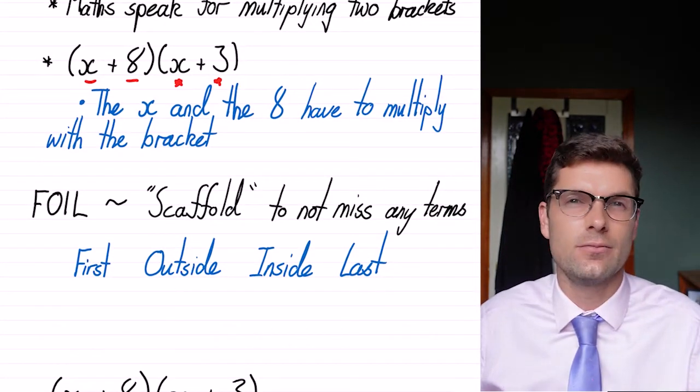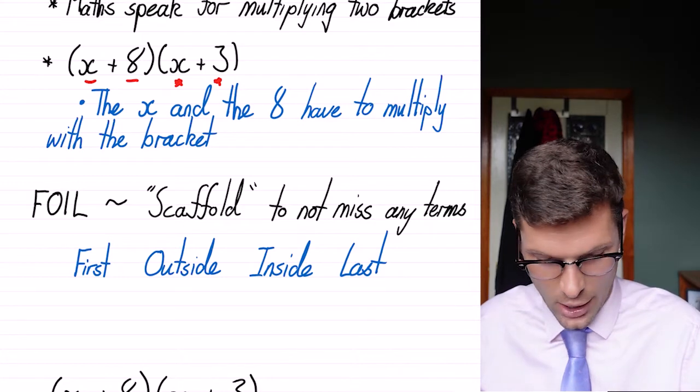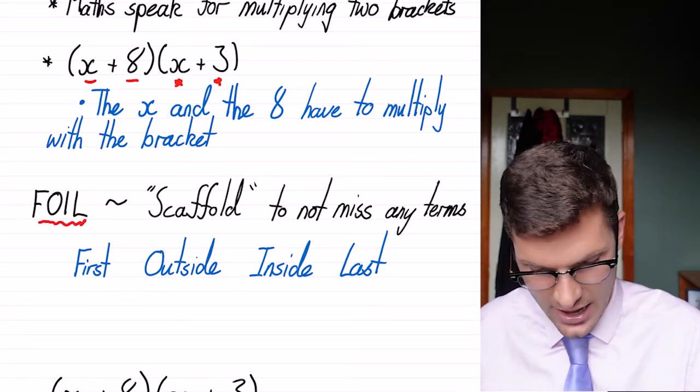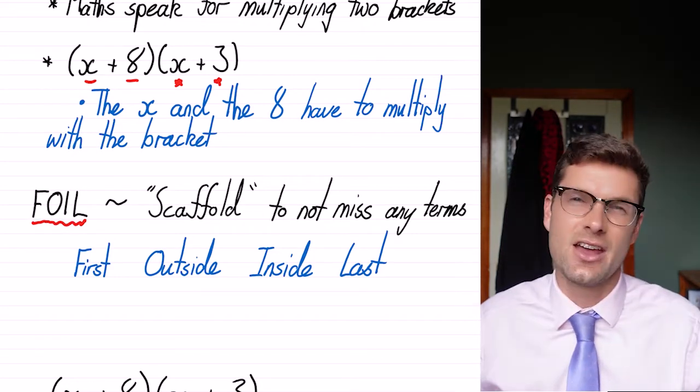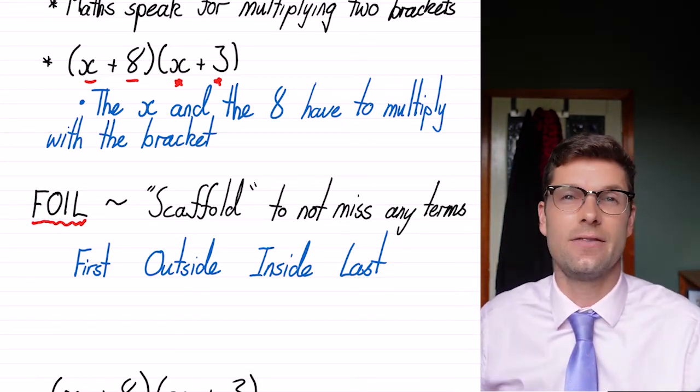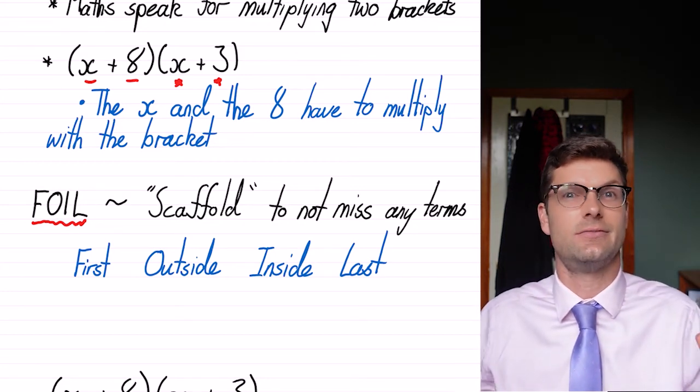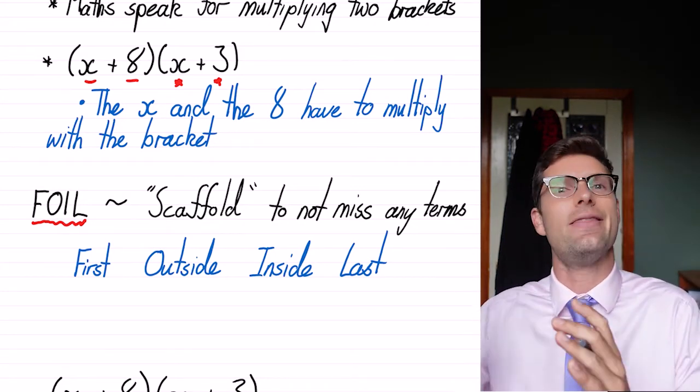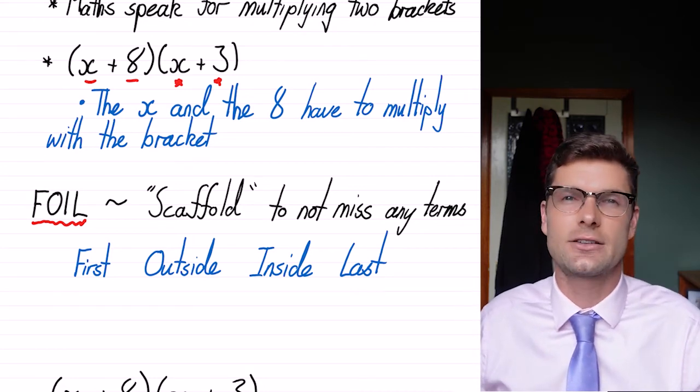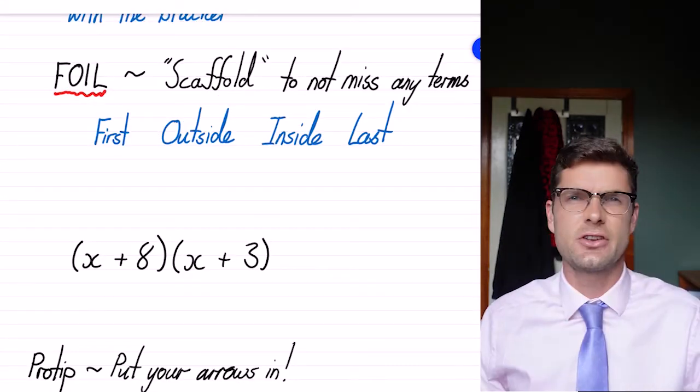So the way that you might have been taught this is a scaffold to make sure you don't miss any terms. And it's called FOIL. So what that means is that we're going to multiply the first number, then the two outside numbers, then the two inside numbers, and then the last numbers. After that, we've got to collect any like terms, and then we're done.